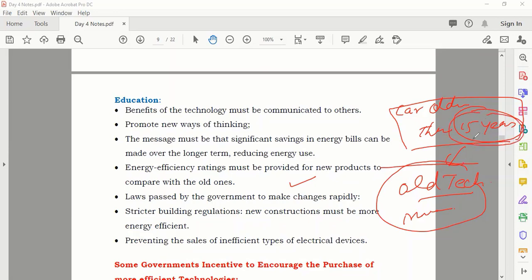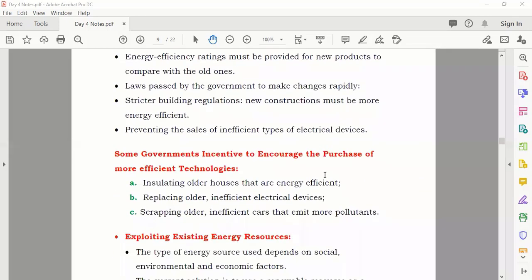The government can pass some laws. After that, preventing the sale of insufficient types of electric devices. For example, if you have a device in the market which takes a lot of energy and gives you less input, the government should ban that. You have to educate the people how to save energy.